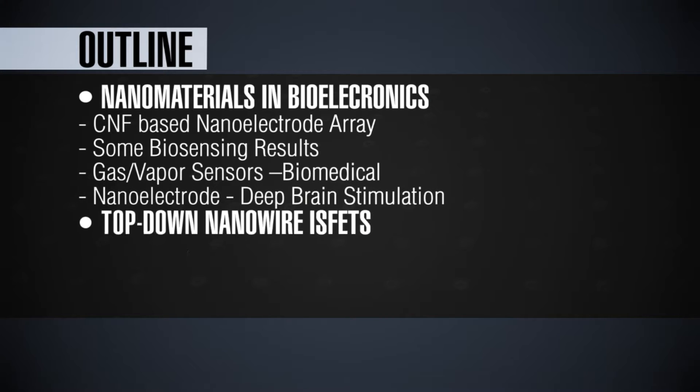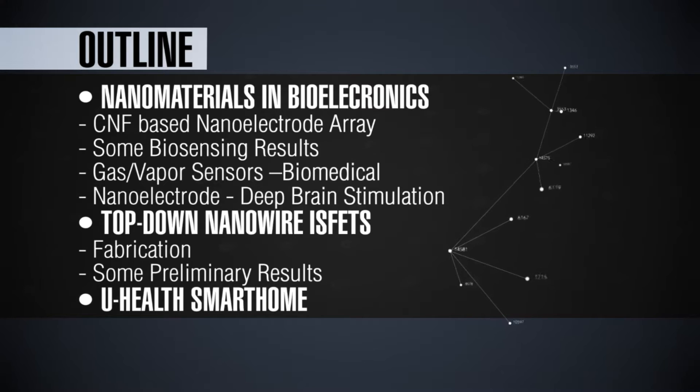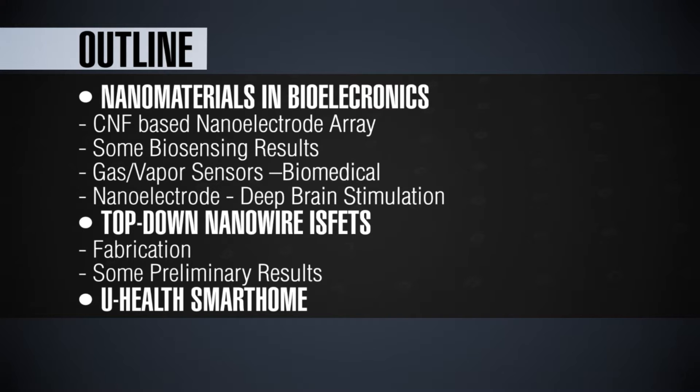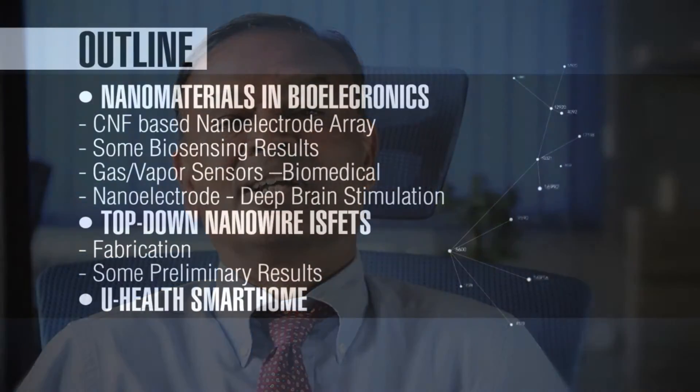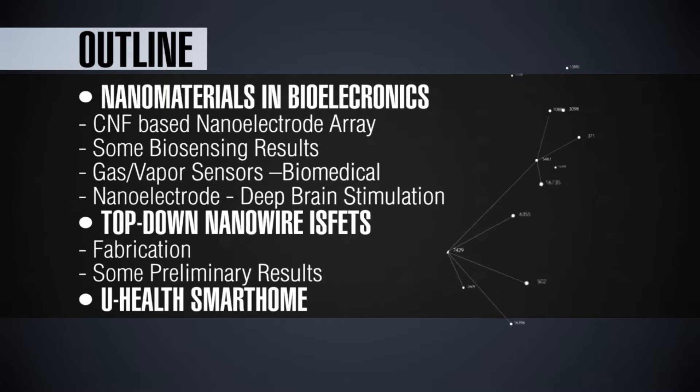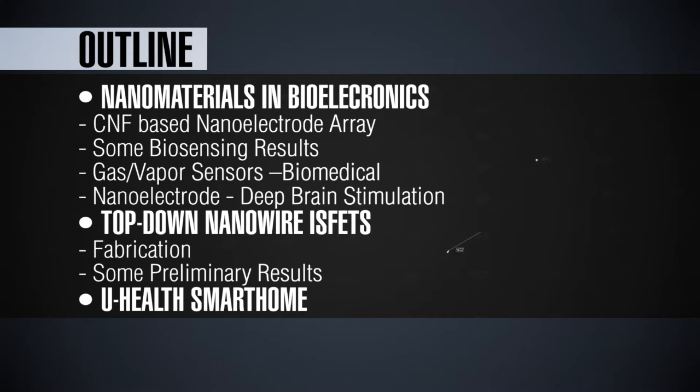In my earlier lecture I talked about different types of sensor platforms. In this lecture I'm going to use a couple of different approaches. The first one is an electrochemical approach where carbon nanotubes can be used to construct a nano electrode array, and I will give some examples of sensing results from this array. The second type of transduction platform is based on a field effect transistor, the so-called bio field effect transistor, including how to fabricate that using silicon and some preliminary results.